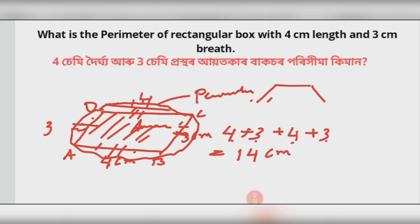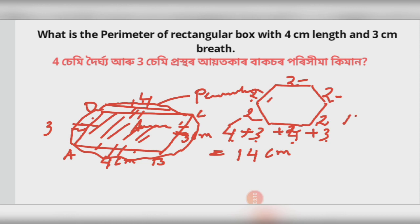This hexagon is a closed shape. The perimeter applies to any polygon — hexagon or otherwise.